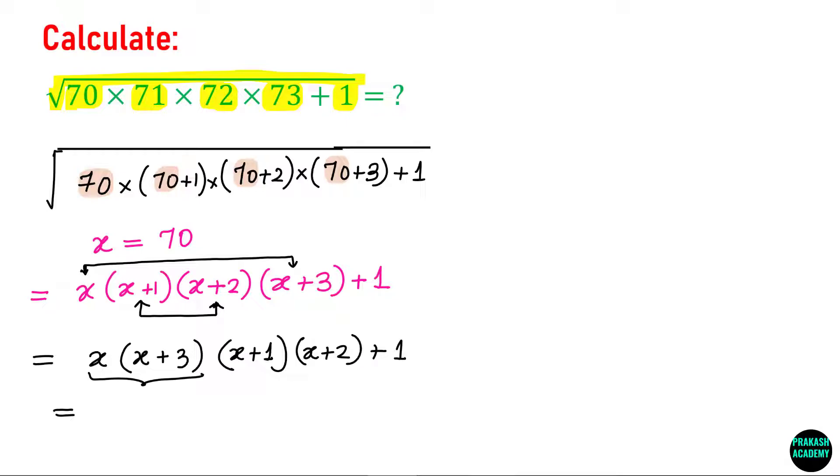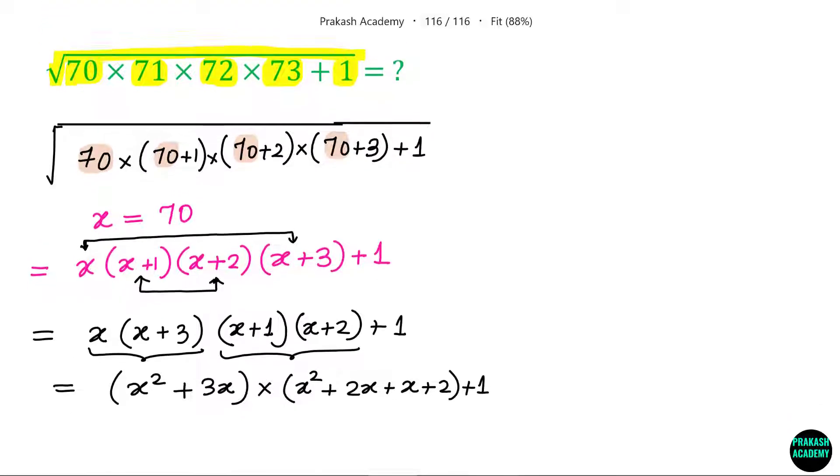If you multiply these two terms, it will be x square plus 3x. Now let us multiply these two terms. You will have x square plus 2x plus x plus 2 plus 1. This will be x square plus 3x times x square plus 3x plus 2 plus 1.